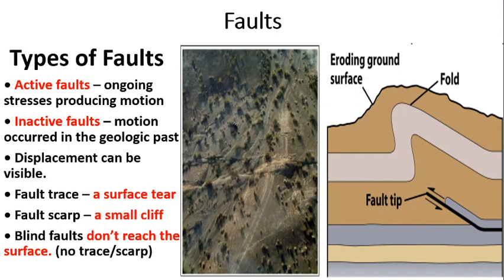Here we have active faults and inactive faults. In active faults, there will be continuous traces producing movements along the fault line. If a fault was active in the past but is no longer active, the displacement may still be visible to our eyes. The fault trace — a near-surface tear — will be available, along with a small cliff or fault scar, as shown in the right-hand side image. If it is a blind fault, it will not have a trace or scar.